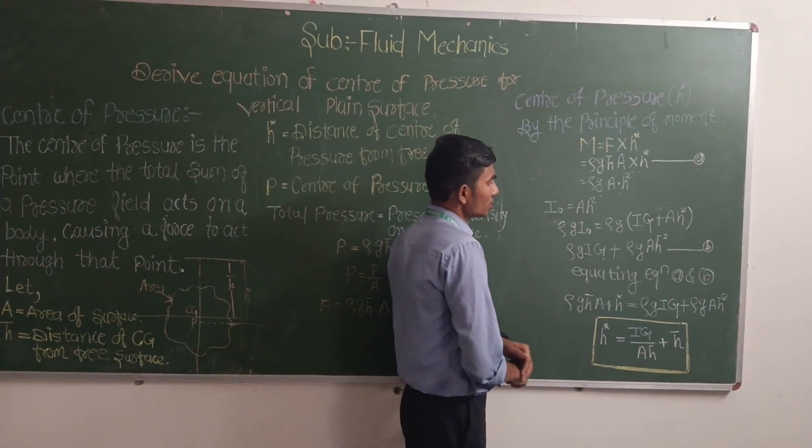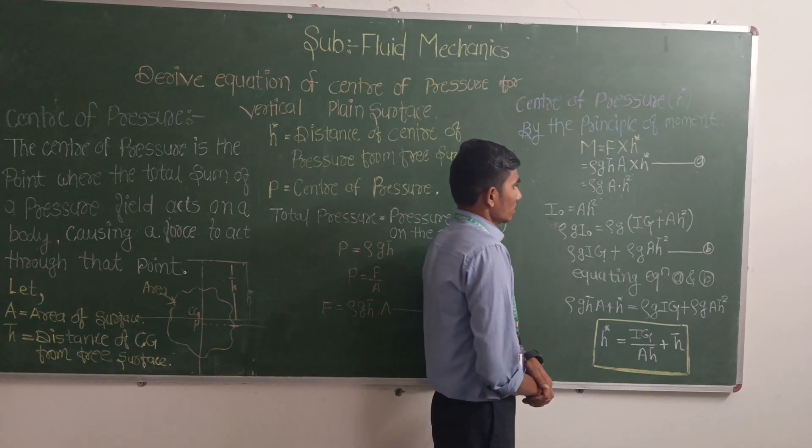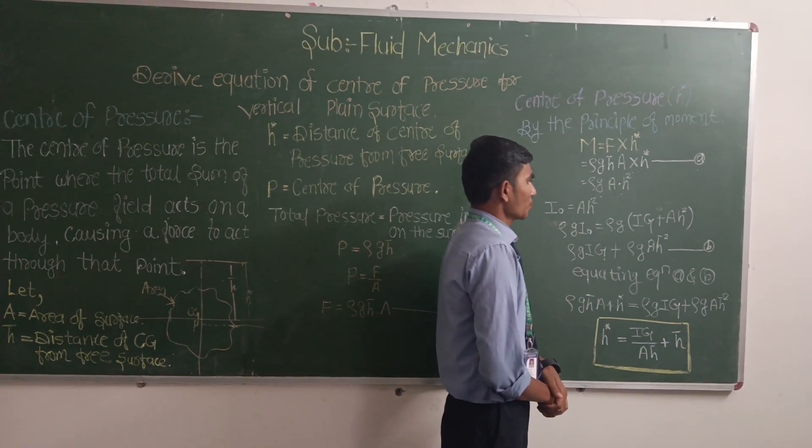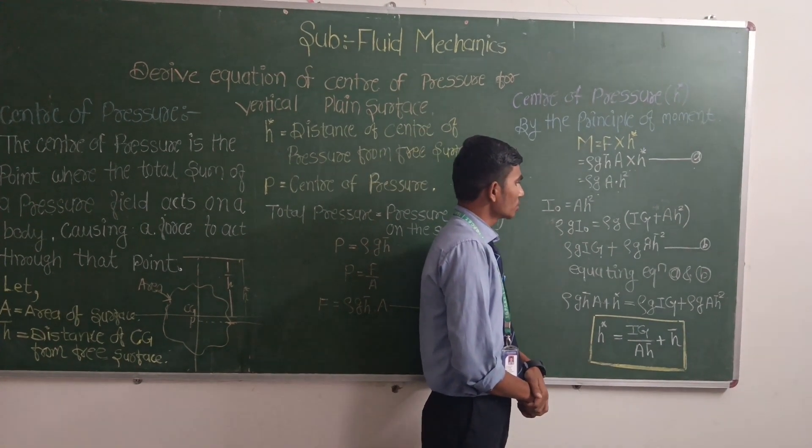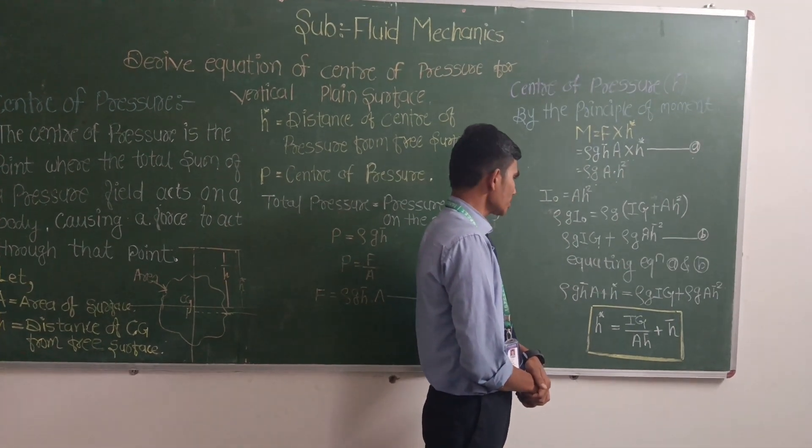G is equal to I-z, rho into G. I-z plus S-square, rho into G plus I-z plus rho into G plus S-square.